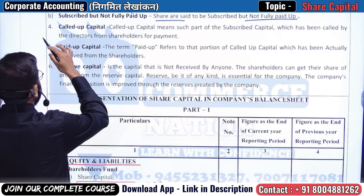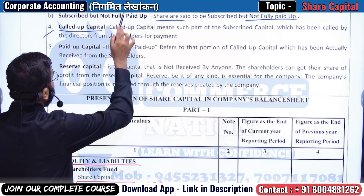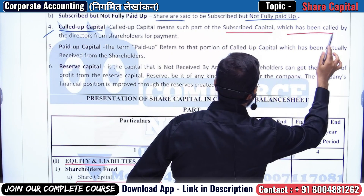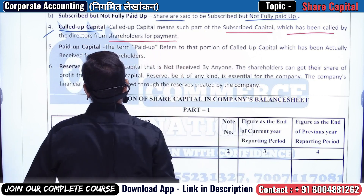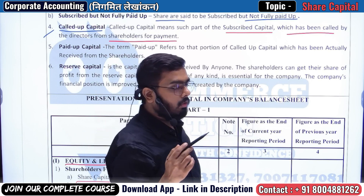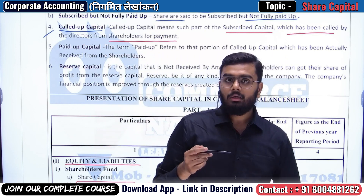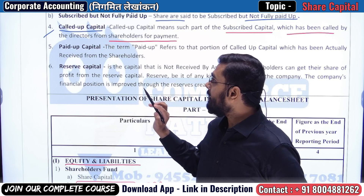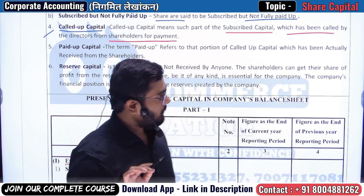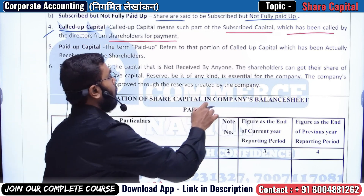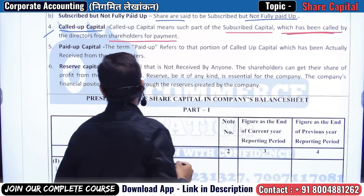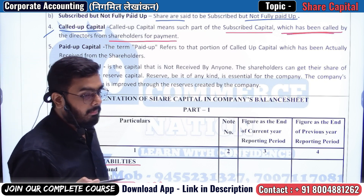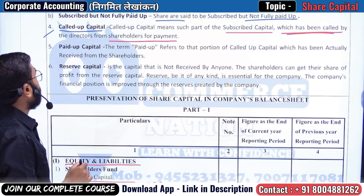The fourth type is called up capital. Called up capital means such part of subscribed capital which has been called by the directors from the shareholders for payment. The name itself tells you — 'called up' means demanded or asked for. Company directors have demanded payment on each share. Whatever amount the directors have called from the shareholders is called up capital.